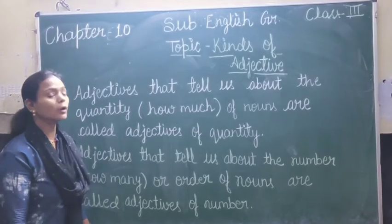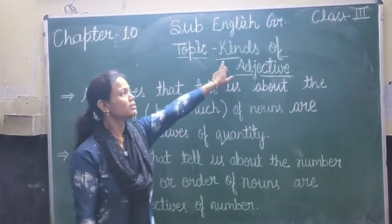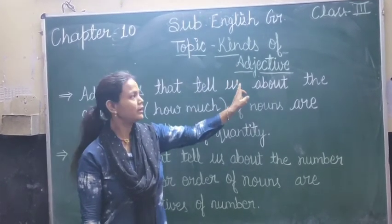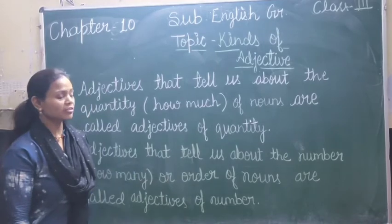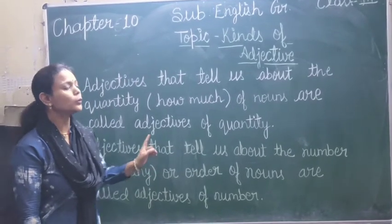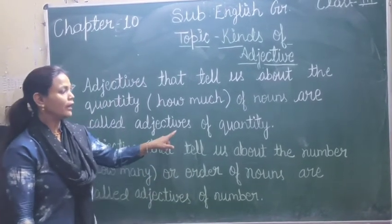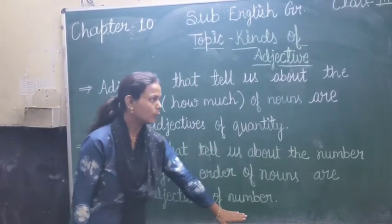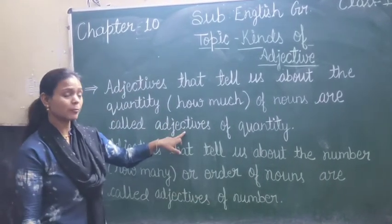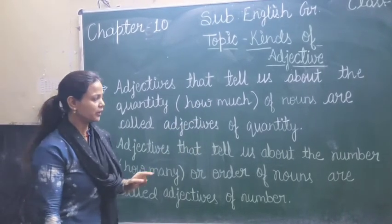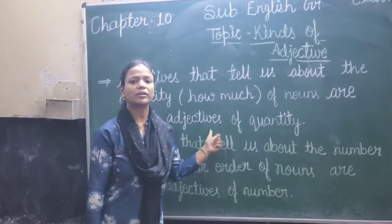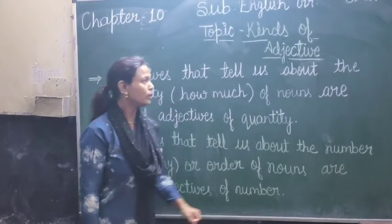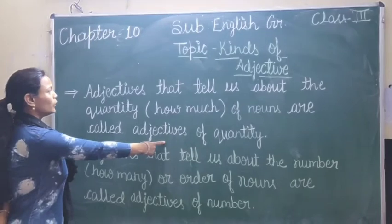Now come to the topic. The topic is kinds of adjectives. Adjectives ke kitne kinds hote hain? In this chapter, we will learn two kinds of adjectives: adjectives of quantity and adjectives of number. Is chapter mein hum adjective ke do kinds padhenge — pehla adjective of quantity aur doosra adjective of number.